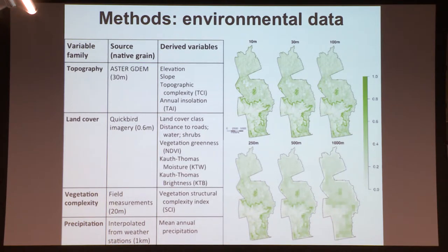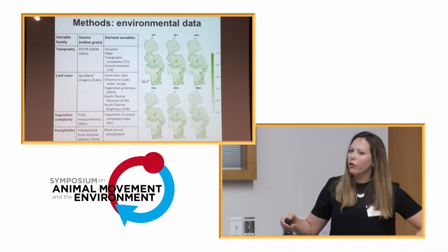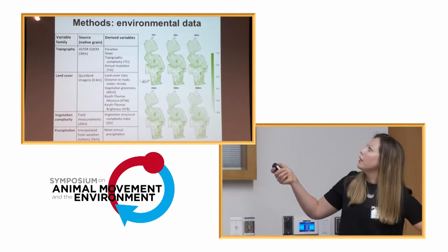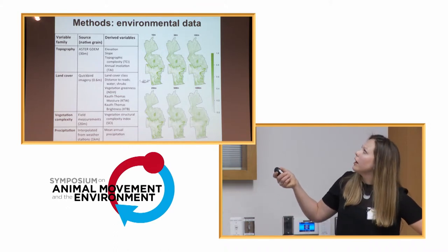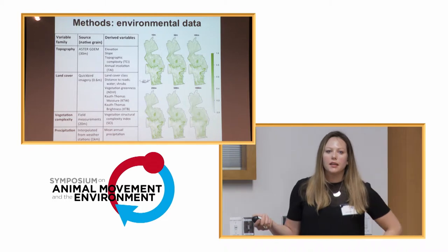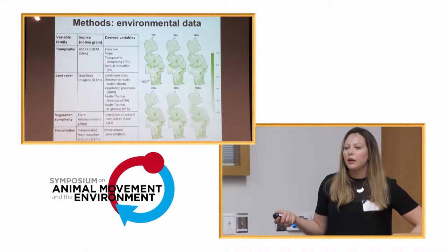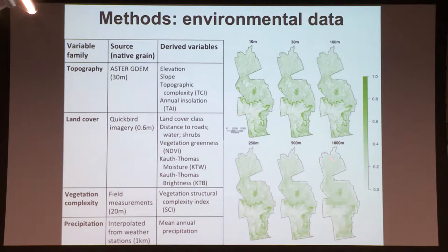This is an example of how the vegetation complexity structural index varies across spatial grains in the study landscape. For the multi-grain model framework, we selected six grains to include in this study. The finest grain is 10 meters, and all other grains represent commonly used remote sensing data: the Landsat platform at 30 meters, the MODIS platform at 250 to 500 meters, and common global environmental datasets such as AVHRR and Bioclim are often available at one kilometer. We derived variables from a subset of native grains and resampled them to these commonly used grains of analysis in ecological studies.